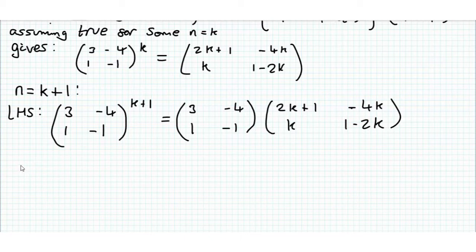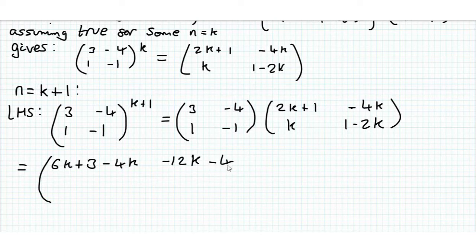So this turns out to be equal to, going along this first row, we get 3 times (2k+1), so that's going to be 6k+3 minus 4k, which is equal to 2k+3 because we go along this row, down this column. And then for this next column, we're going to do 3 times -4k, which is -12k. Then we're going to do -4 times this bottom term here, so that's going to be -4 plus 8k.